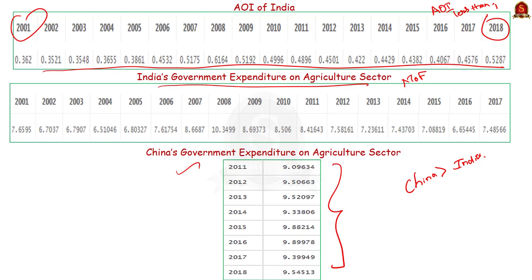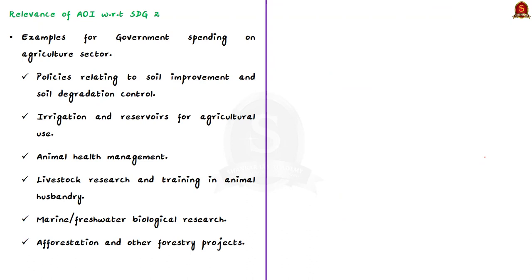Having seen what the AOI value indicates, let me tell you how relevant it is to show the progress of the country towards Sustainable Development Goal 2, mainly agriculture growth. Consider the AOI to be equal to or greater than one. Let me give you a few examples of government spending on the agriculture sector.